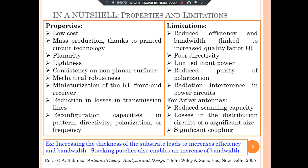In summary, Microstrip Antennas have some important properties like low cost, mass production thanks to printed circuit technology, planarity, lightness, conformability on non-planar surfaces, and mechanical robustness. They are used in wireless communication as well as in embedded systems like aircraft and missiles. Furthermore, the potential to integrate MMIC components on the antenna substrate enables miniaturization of the RF front-end receiver, reduction in losses in transmission lines, and re-configuration capabilities for pattern, directivity, polarization, or frequency.